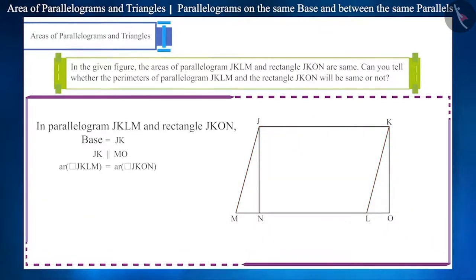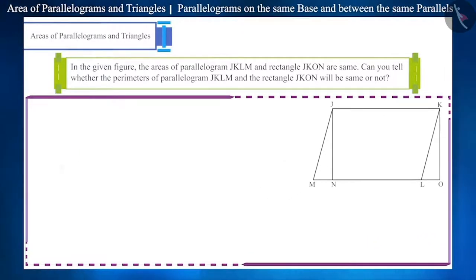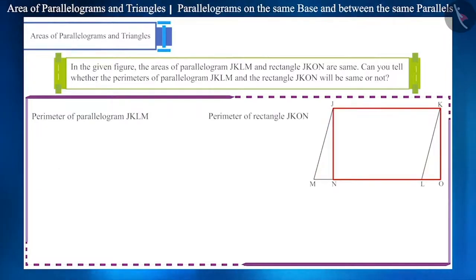But, can we say the same for their perimeter as well? Let us write the parameters of both quadrilaterals. The parameter of parallelogram JKLM is the sum of the lengths of all sides JK plus KL plus LM plus MJ.